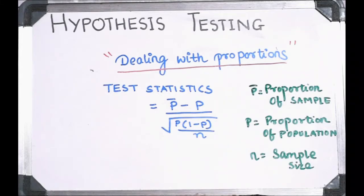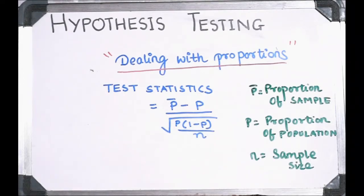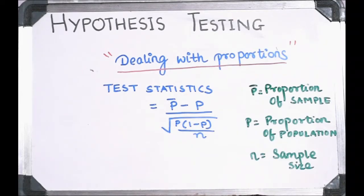Have a look at the formula of the test statistics in this case. It would be P-bar minus P, divided by the square root of P into (1 minus P) by N. Where P-bar is the proportion of the sample, P is the proportion of the population, and N corresponds to the sample size. In these types of questions you will not be given the mean of the sample or population — you will be given proportions.